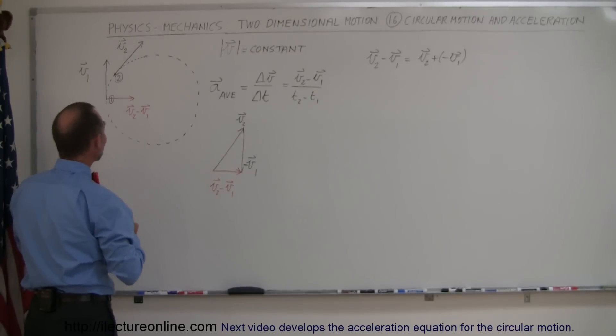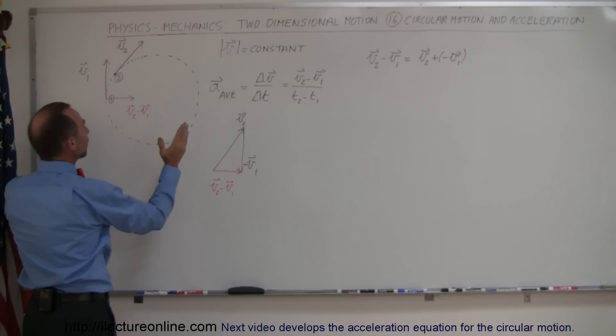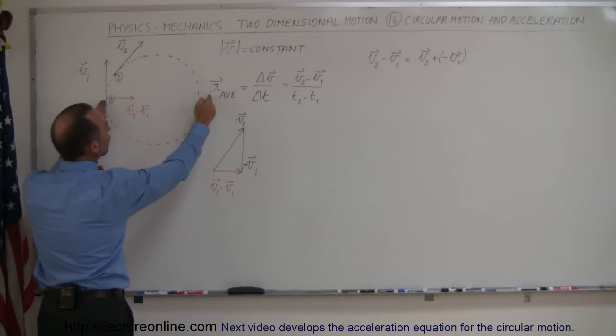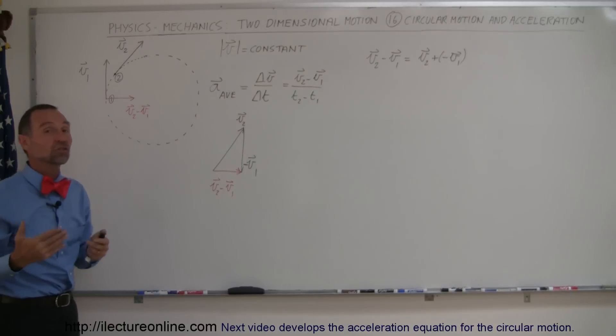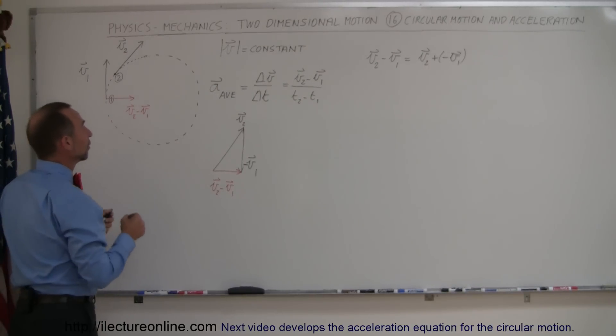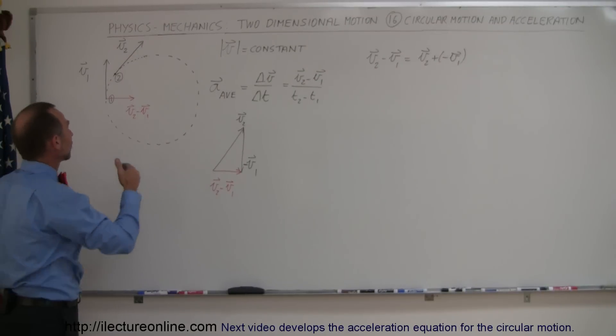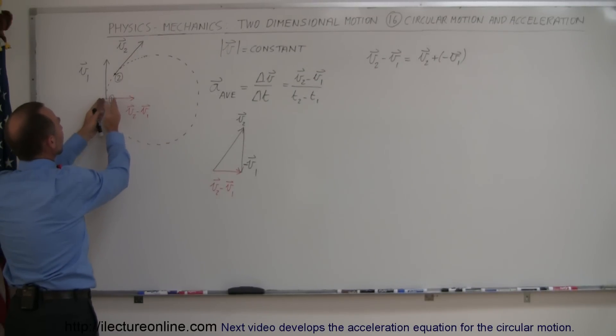If the object goes really fast, then delta T will be very small. If I divide this by a very small number, I will get a very large vector, meaning I have a large acceleration. But if the object moved very slow and the delta T will be very very large, then of course I divide by a large number and then this vector will become very small.